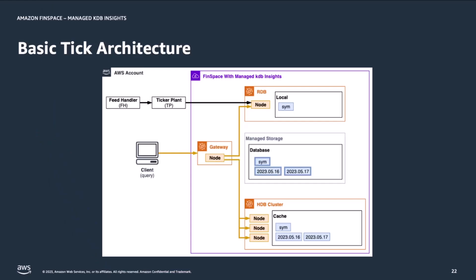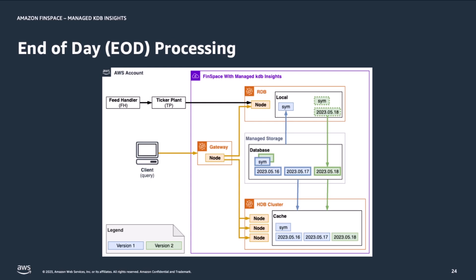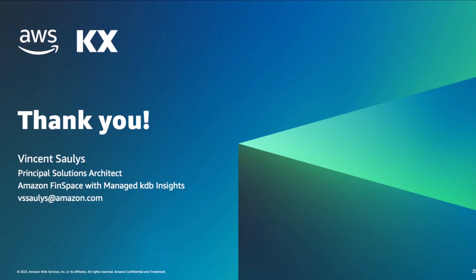Let's wrap things up. In this video, we demonstrated how you can use Amazon FinSpace with Managed KDB Insights to implement a basic tick architecture — creating an RDB for real-time query and data capture subscribing to a ticker plant which collects data published by a feed handler, and an HDB that serves up historical data of the database, with queries from clients handled by a managed gateway cluster. We demonstrated how clients using PyKX can easily connect to the gateway and query for both real-time and historical data. And finally, we showed how to implement an end-of-day process where the RDB saves down its captured data and adds that new version of data to the HDB's historical record. Thank you for letting us introduce you to Amazon FinSpace with Managed KDB Insights.